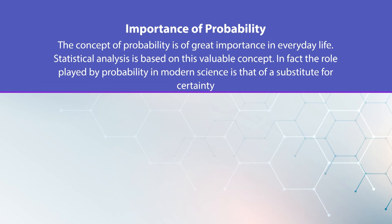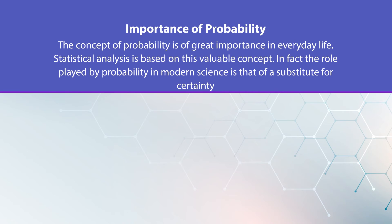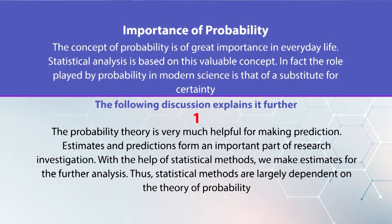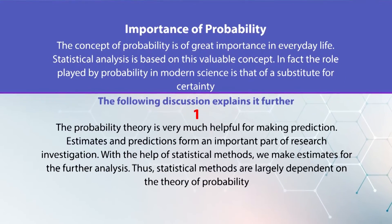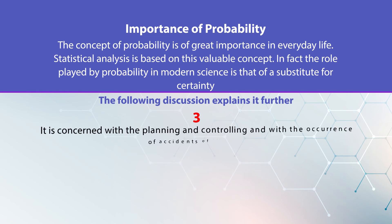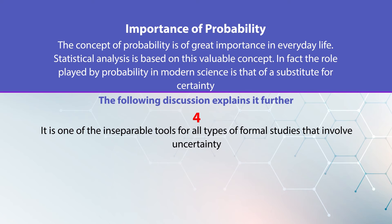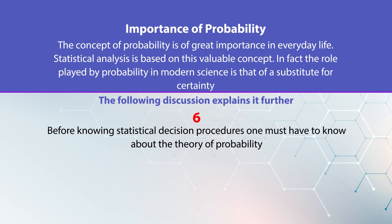The concept of probability is of great importance in everyday life. Statistical analysis is based on the variable concept. The role played by probability in modern science is that of a substitute for certainty. Probability theory is very helpful for making predictions — estimates and predictions form an important part of research investigations, and with the help of statistical methods we make estimates for future analysis. Statistical methods are largely dependent on the theory of probability. It also has immense importance in decision making — it is concerned with planning, controlling, and with the occurrence of accidents. It is one of the inseparable tools for all types of formal studies that involve uncertainty.